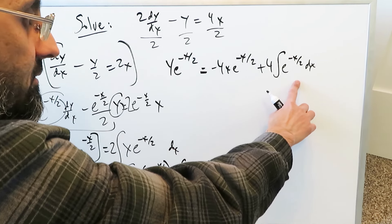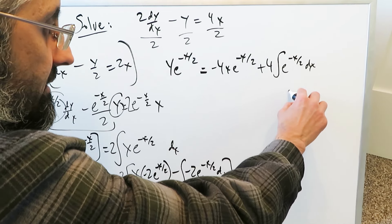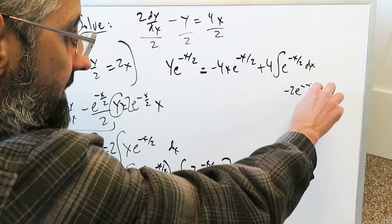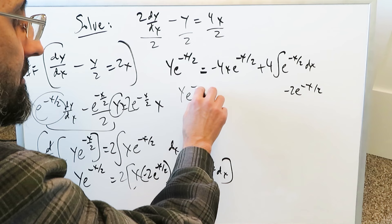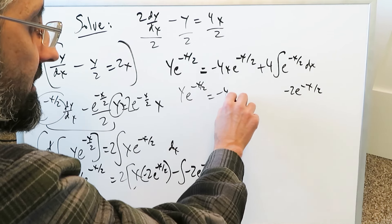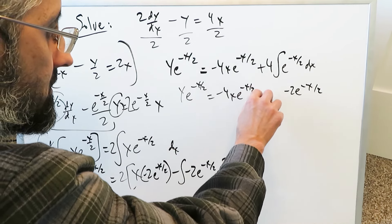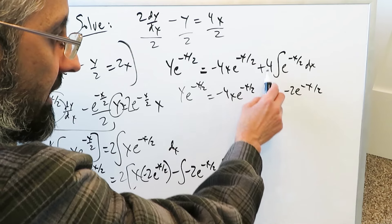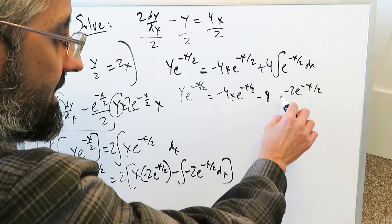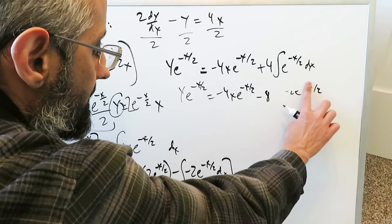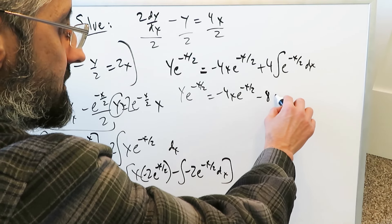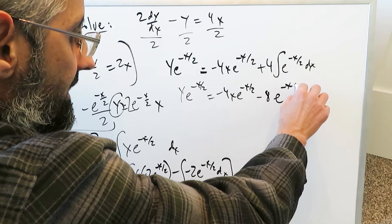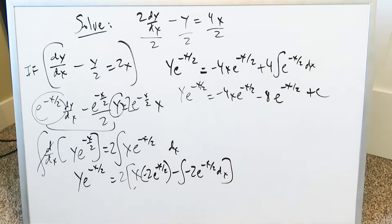We still have to integrate e to the minus x over 2, whose antiderivative is minus 2 e to the minus x over 2. Combining everything: y e to the minus x over 2 equals minus 4x e to the minus x over 2, and then minus 2 multiplied by 4 gives minus 8, so we get minus 8 e to the minus x over 2 plus c.